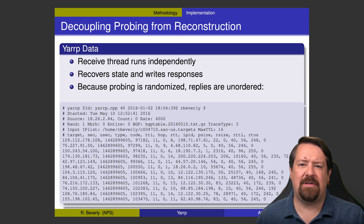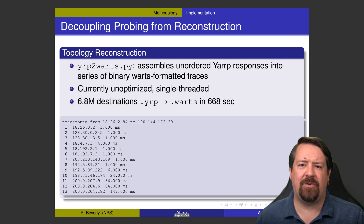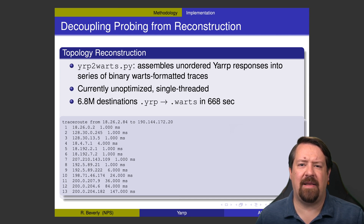The responses come back in random order and YARP just records them, and then a separate tool reassembles them into traceroutes. After that reassembly, we have something that looks like normal traceroute output. These are stored in binary warts files, which are the same kind of files that the scamper tool uses, and which has been the industry standard for topology inference data.